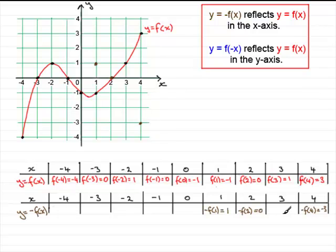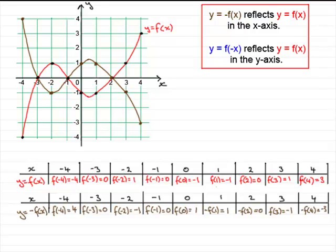If you work out all the other points you'd have a full table, and if you plot those coordinates you can see the outline of the graph emerge. Drawing that graph gives you a reflection in the x-axis of y equals f of x — so this graph is y equals minus f of x.